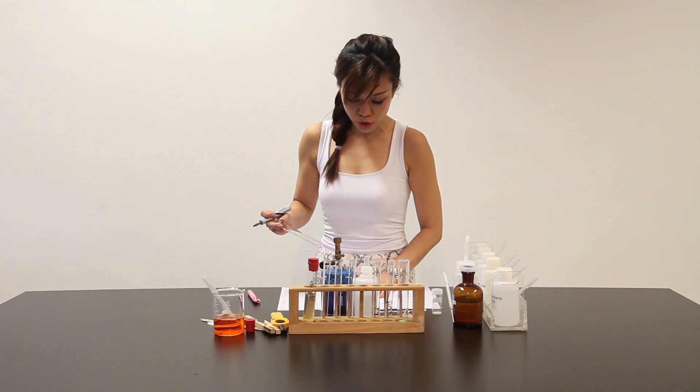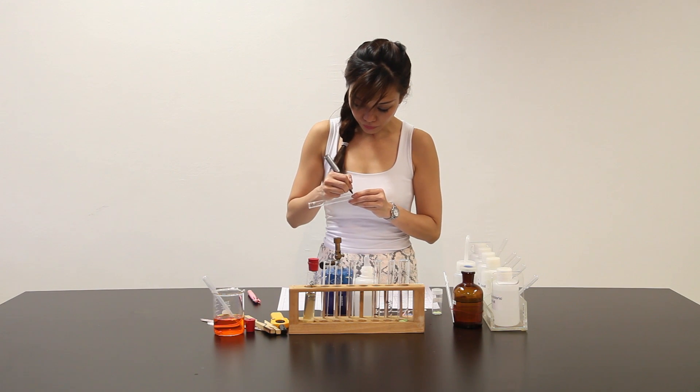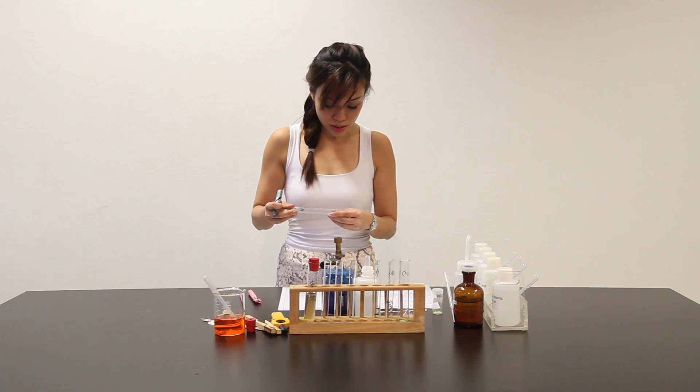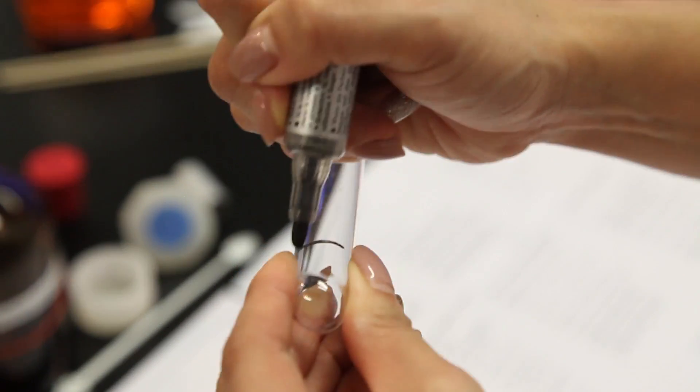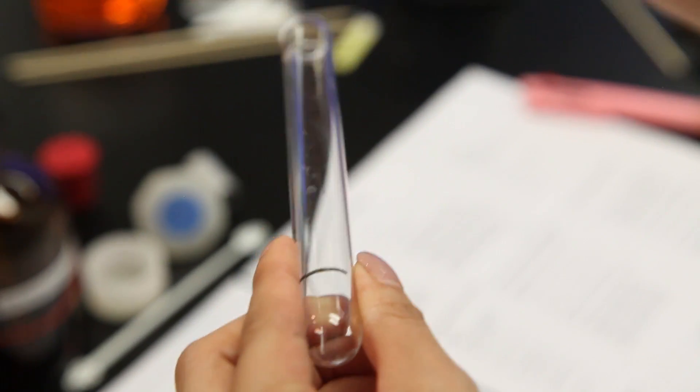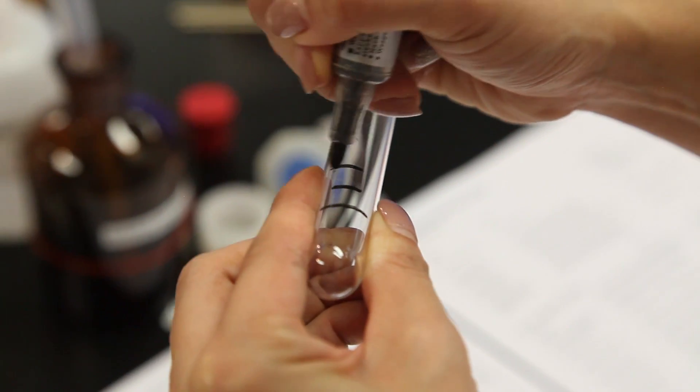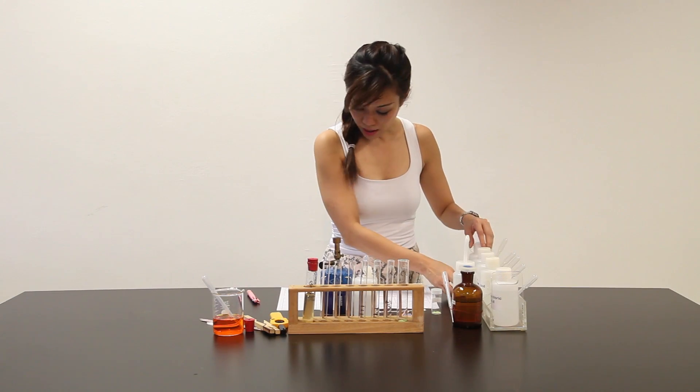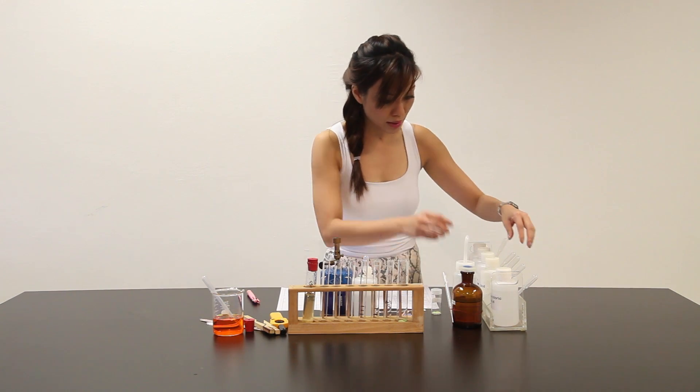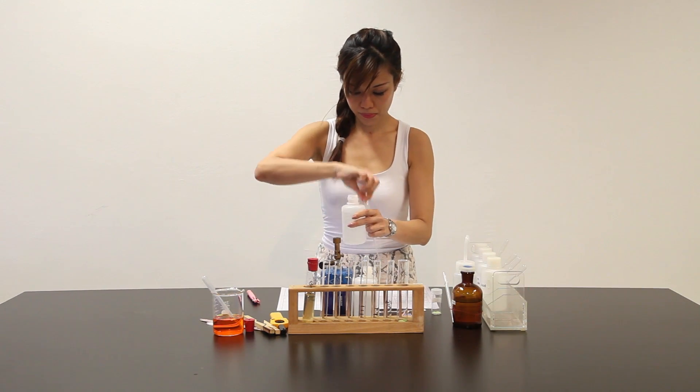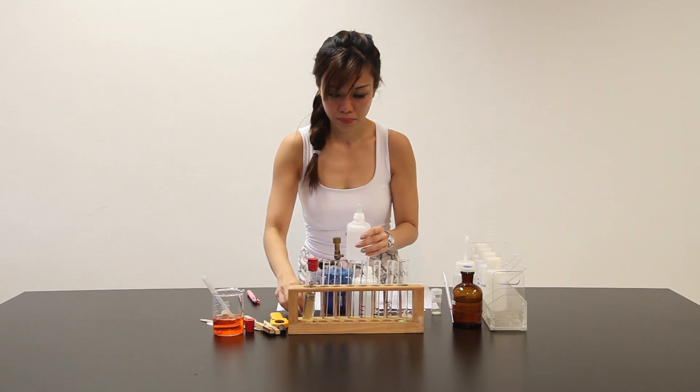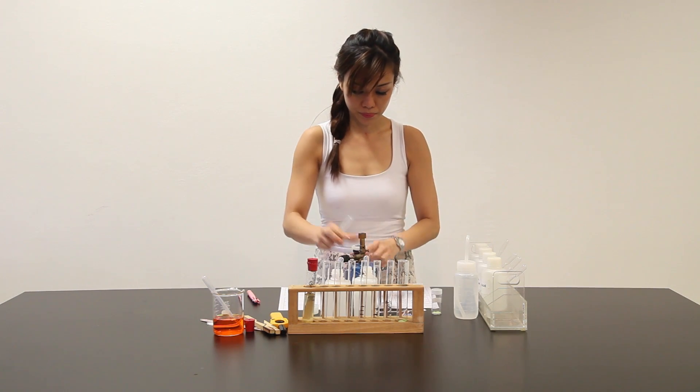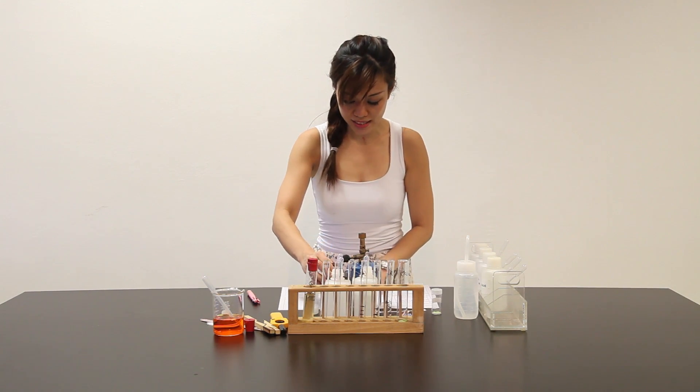Part D says that place about 2 cm3 of Q into a clean test tube. And to this solution, add another 1 cm3 of dilute hydrochloric acid followed by another 1 cm3 of barium chloride. So let me put this here. I need to add dilute hydrochloric acid and barium chloride which is here. So everything is set up.